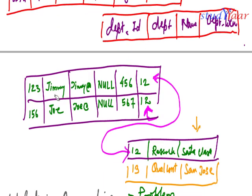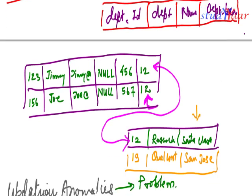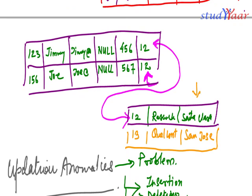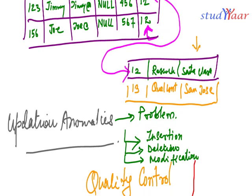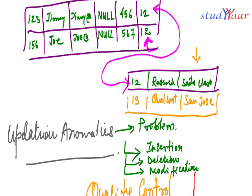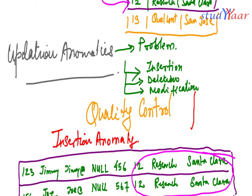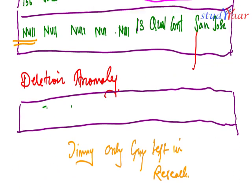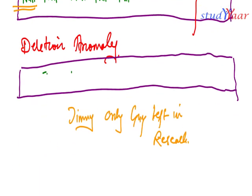However, in the decomposed schema, I could have easily deleted Jimmy and Joe, but the research tuple in the department table would still be there. I would still know that the research department had department ID 12 and was located at Santa Clara. That is the concept of deletion anomaly.